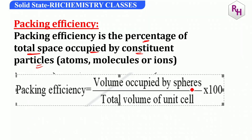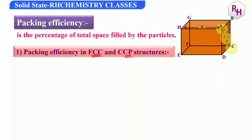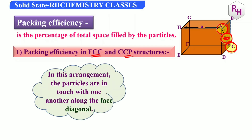The formula is: volume occupied by the spheres divided by the total volume of the unit cell, multiplied by 100. First, we will see FCC or CCP structure packing efficiency. In the FCC structure, we have corner particles and face center particles.